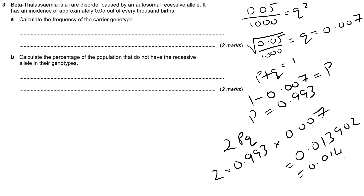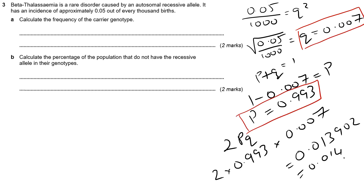Then we simply do 2 times P times Q, which is 2 times 0.993 multiplied by 0.007, which gives us a value of 0.013902. When we round it off, that gives us 0.014. If you punch all those numbers into a calculator without doing any rounding off for P or Q, your final answer rounds off to 0.014 as well.